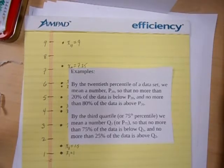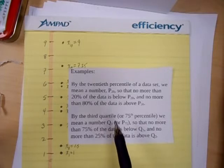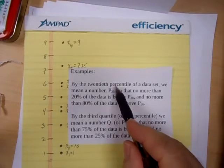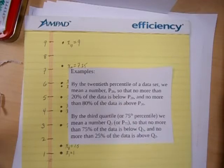Okay, we're going to look at percentiles, quartiles, and deciles. Here's a couple examples of what we mean, and then I'll let you generalize the definition. By the 20th percentile of a data set, we mean a number P20, often written with the P and a subscript 20, so that no more than 20% of the data is